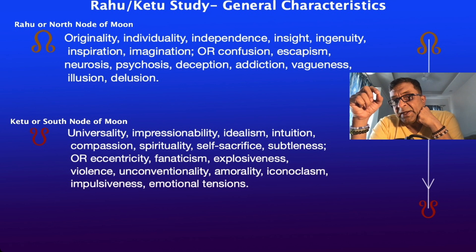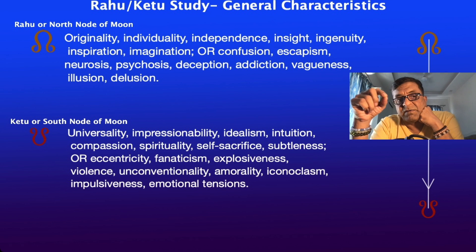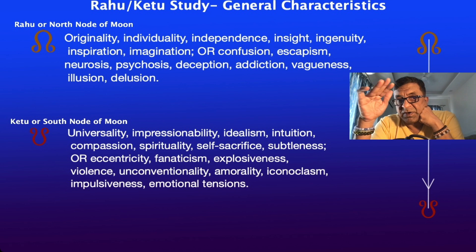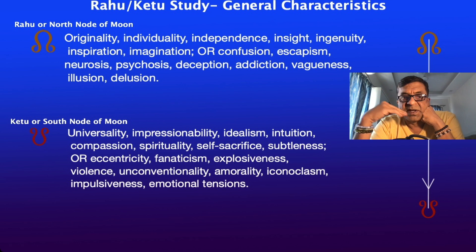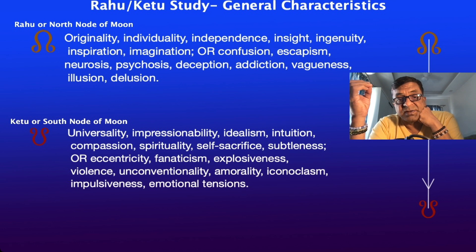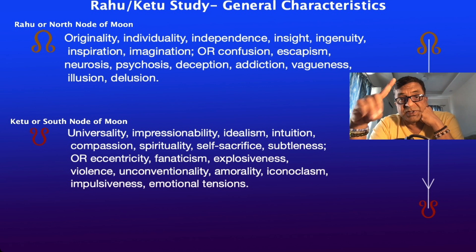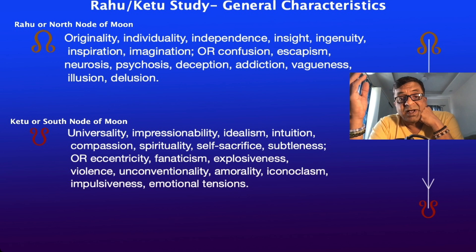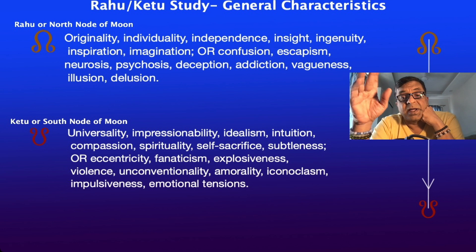Rahu on the downside leads to confusion, escapism, neurosis, psychosis, deception, addiction, vagueness, illusion, and delusion. Ketu, the one with only a body and no head, gives us universality, impressionability, idealism, intuition, compassion, spirituality, self-sacrifice, and subtleness on the positive side. On the downside, it can lead to eccentricity, fanaticism, explosiveness, violence, unconventionality, amorality, iconoclasm, impulsiveness, and emotional tensions.